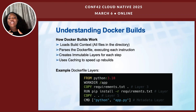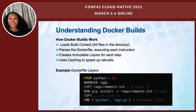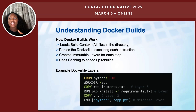The next thing Docker does is parse the Dockerfile. Docker reads the instructions in the Dockerfile and executes them one by one. Then it creates immutable layers — each instruction in the Dockerfile creates a new layer.